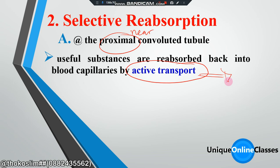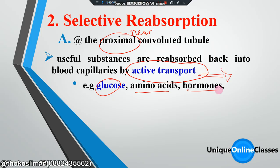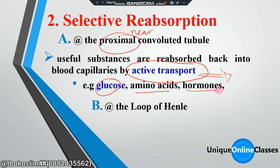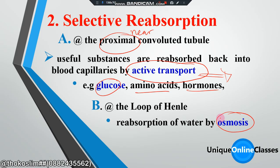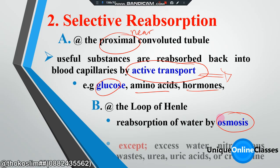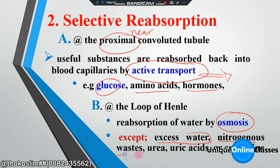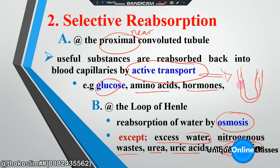The examples of substances which are absorbed back include glucose, amino acids, and hormones — those substances are absorbed back. There is also absorption of water. We have excess water, greenhouse waste products, and other materials. That is the absorption of water.